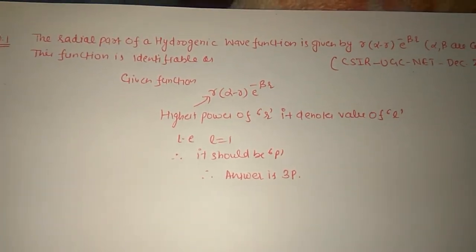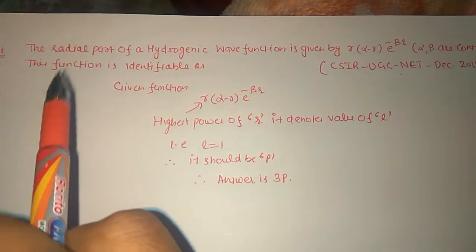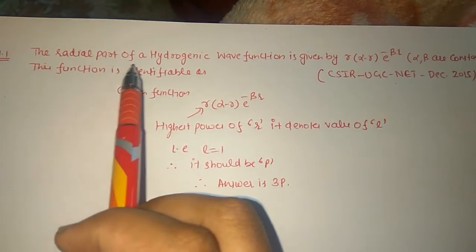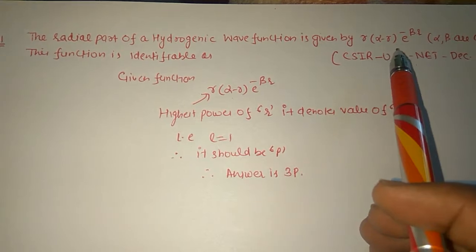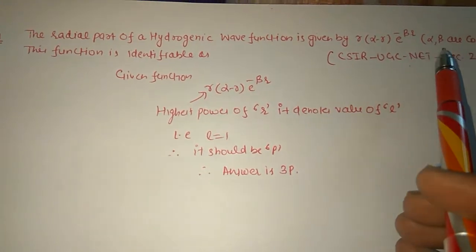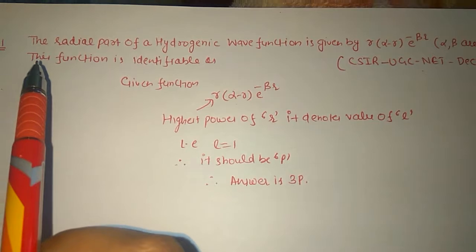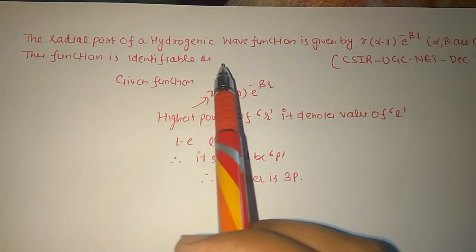Today we are going to discuss a question which was asked in the CSIR UGC NET exam. The radial part of a hydrogenic wave function is given by r(α-r)e^(-βr), where α and β are constants. This function is identifiable as: